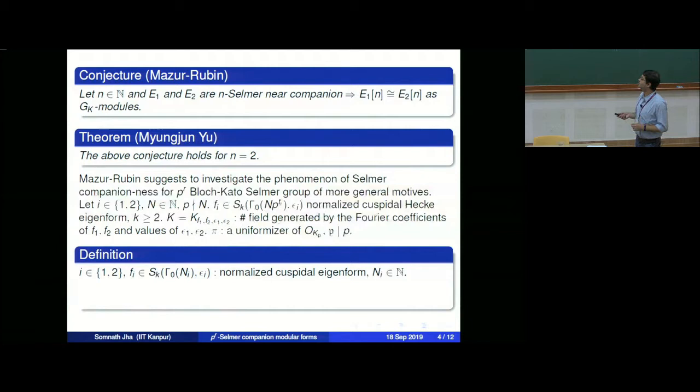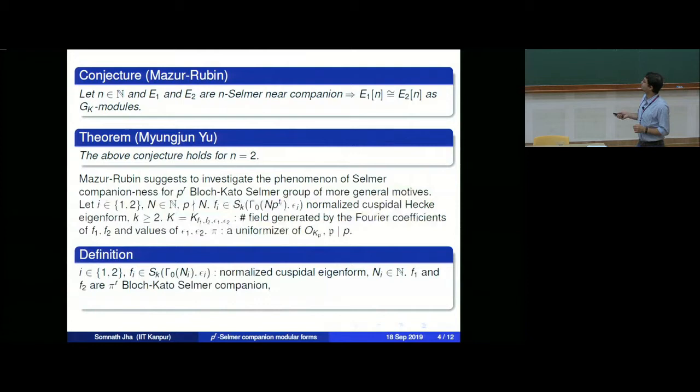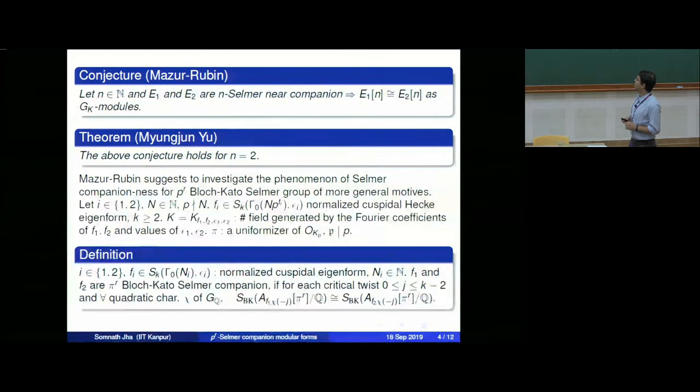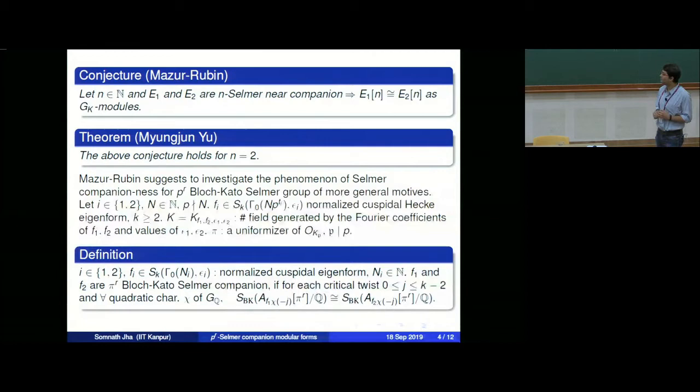We say f_1 and f_2 are π^r-Bloch-Kato Selmer companions if for every critical twist and every quadratic character, the π^r-Bloch-Kato Selmer groups are isomorphic. Note that for an elliptic curve the weight is 2, so there is only one critical value, but for a general weight-k modular form there are k−1 critical values. So one defines k−1 Selmer groups — one for each critical value — and Selmer companion means all k−1 of these groups are simultaneously isomorphic.